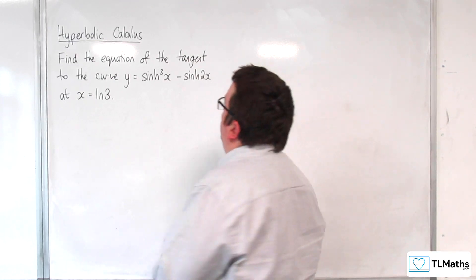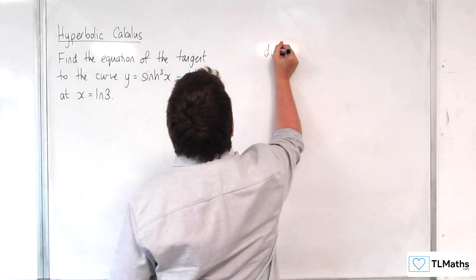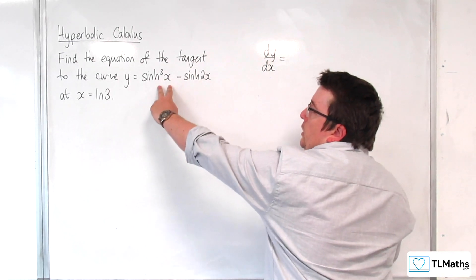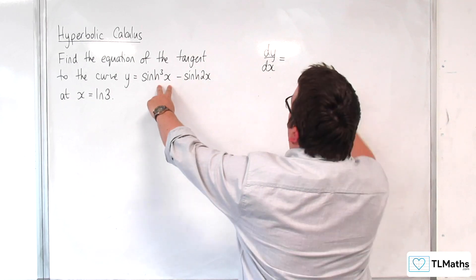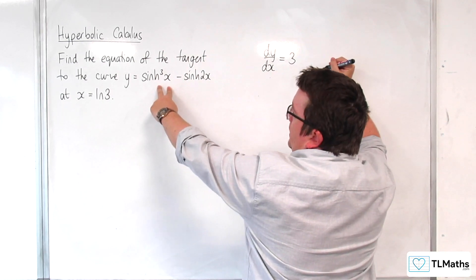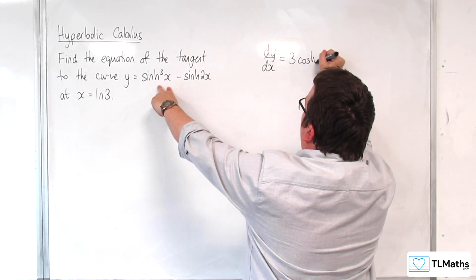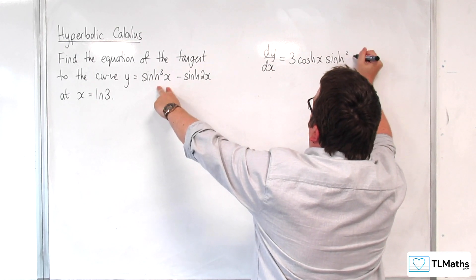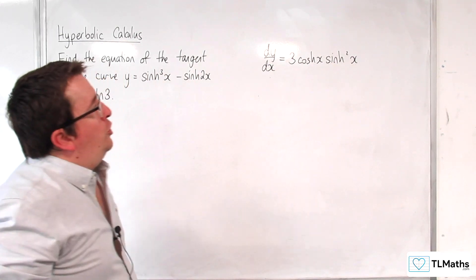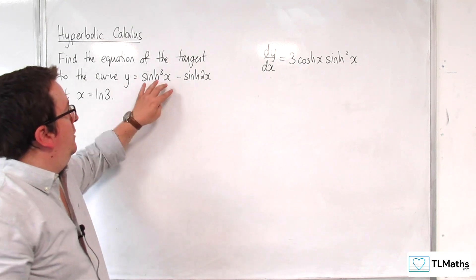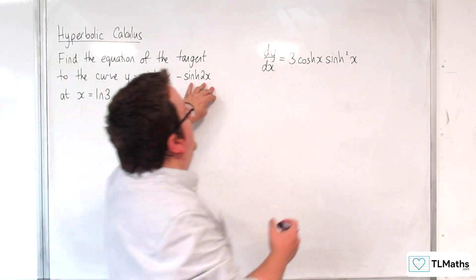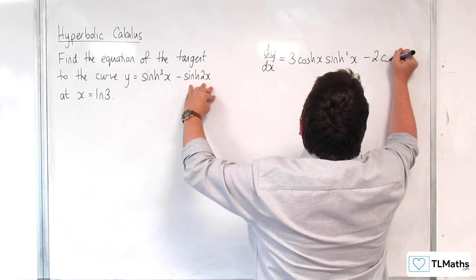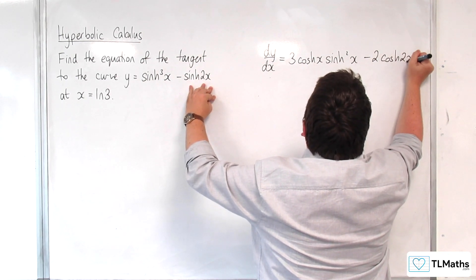So the first thing we're going to need to do is differentiate. So dy/dx is equal to: for sinh³, the 3 is going to come down to the front, the derivative of the inside is cosh, and we drop one from the power. So we get 3·cosh(x)·sinh²(x) from that part, take away 2·cosh(2x).